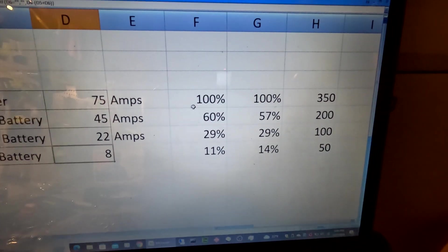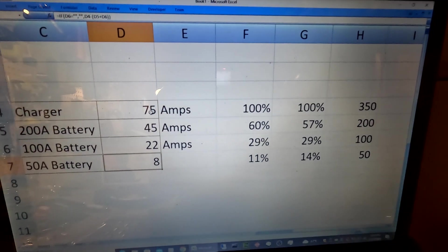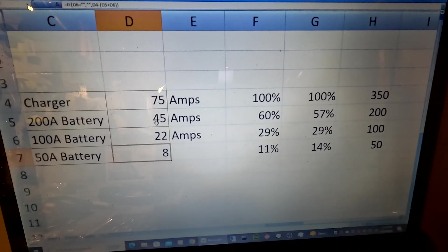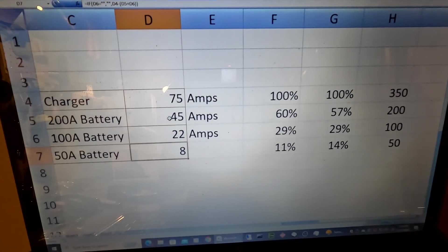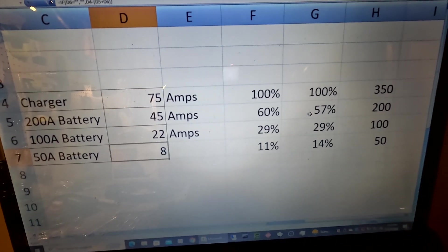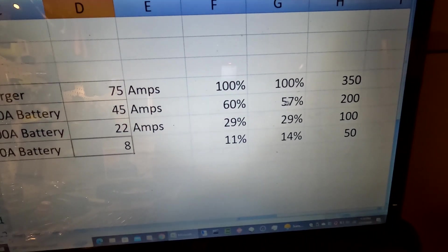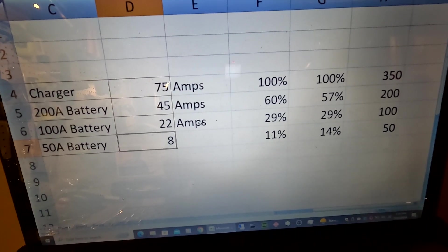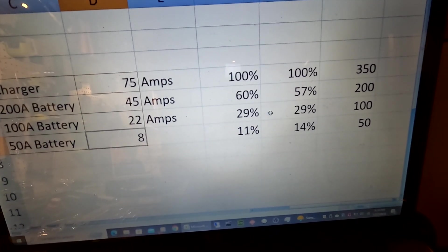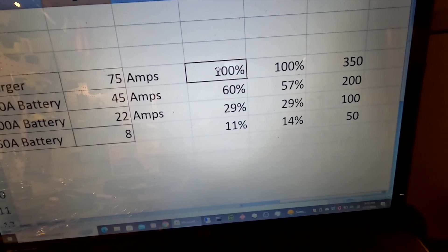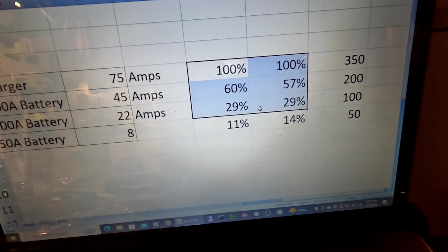You can see that 75 amps of charge is 100%. The 45 amps of charge that the 200 amp battery is receiving is 60%. Now look how close that is to the 57%. And then the 22 amps that the 100 amp hour battery is receiving is 29%. And look at that 29%. So these numbers completely match up.